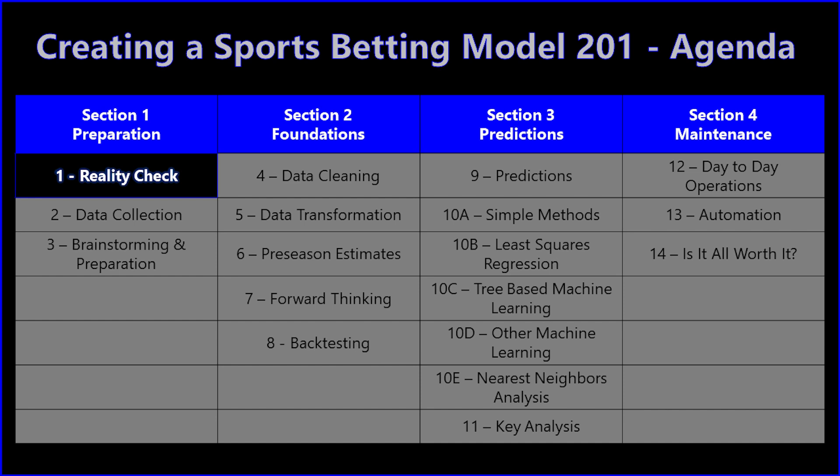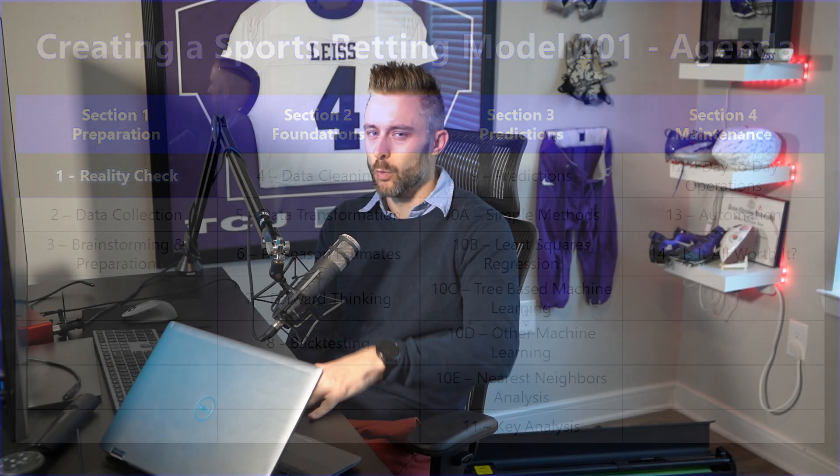This first video is the reality check video — part 1 of 18. The reality check means: what exactly are you getting yourself into if you want to build a sports betting model? There are very simple models, like an ELO-based model that takes maybe an hour or two, and there are very complex models like the ones I build. But first and foremost, you have to ask yourself: why are you creating a model? If your answer is 'I want to win money,' you are in it for the wrong reasons.